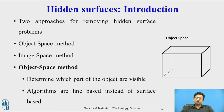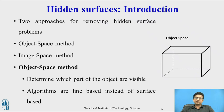There are two methods for hidden surface removal: the object space method and the image space method. In the object space method, it determines which parts of the objects are visible. Various parts of objects are compared, and after comparison, visible, invisible, or partially visible surfaces are determined. This method generally decides which is the visible surface. In the wire frame model, this method is used to determine which lines are visible, and these algorithms are line-based instead of surface-based.